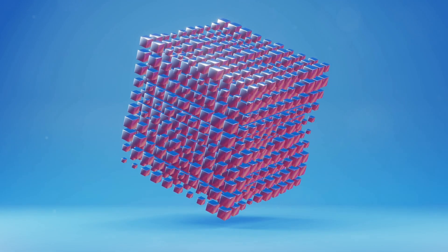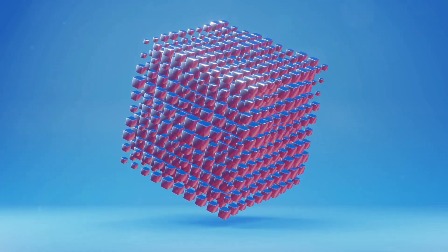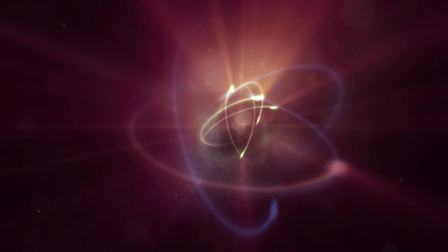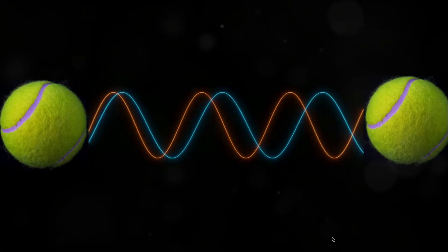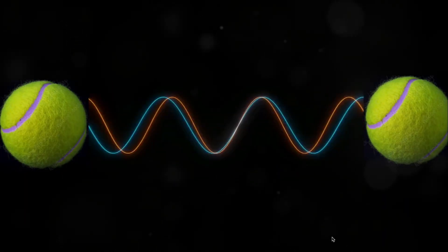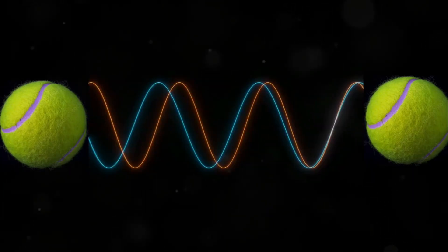In the case of larger objects like a tennis ball, these are composed of trillions of atoms, and each of those atoms has its own quantum wave-like behavior. As they interact with each other, the tiny individual quantum waves of the atoms start to overlap and interfere in complex ways.